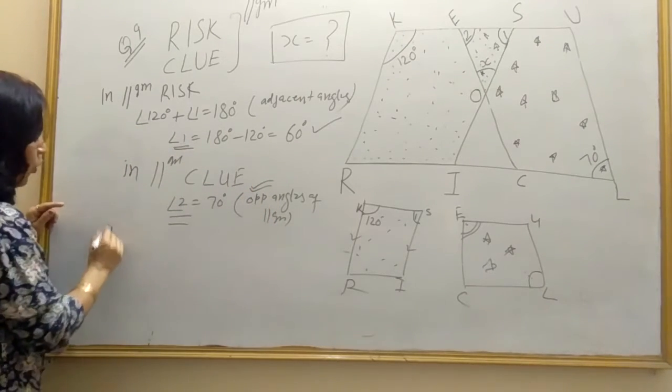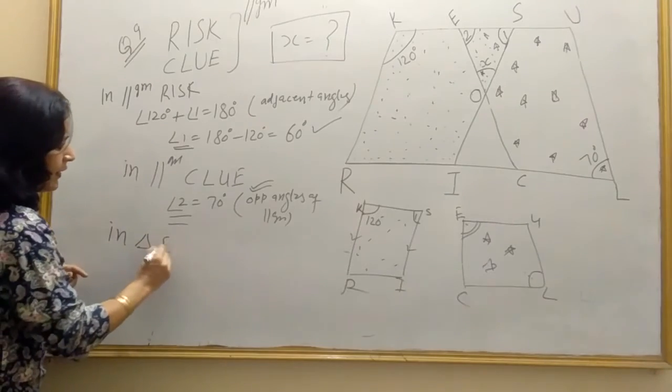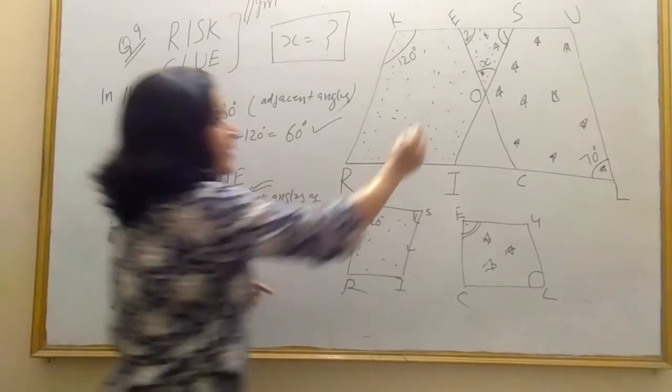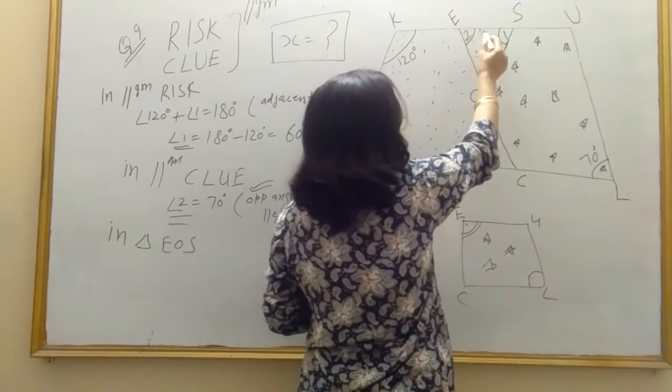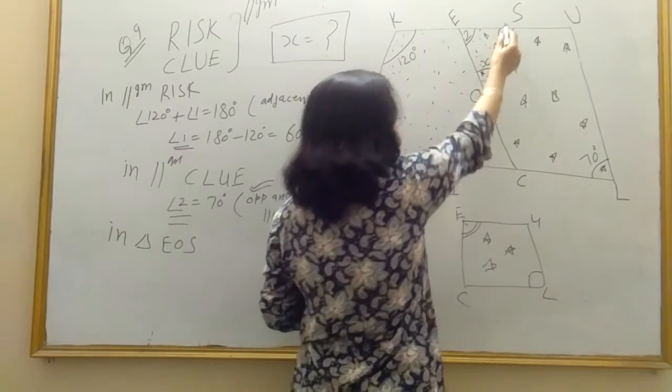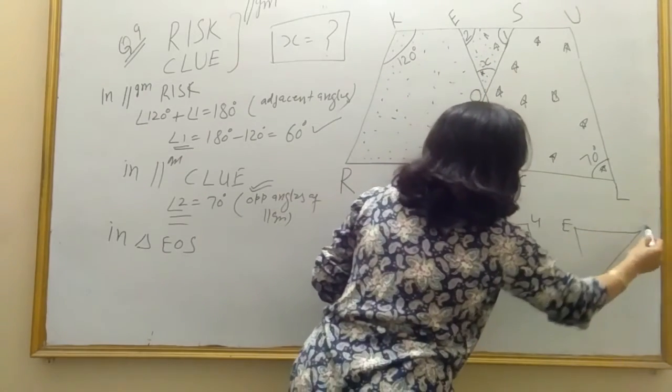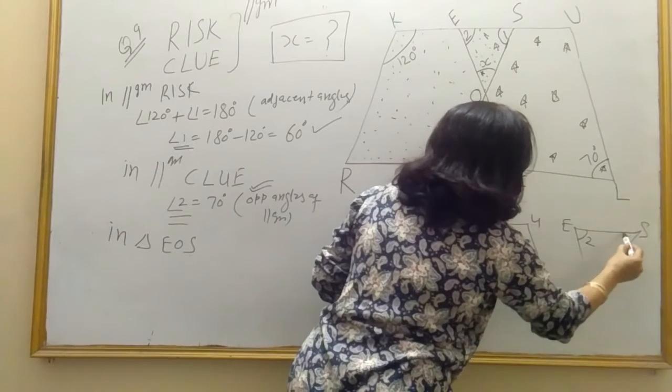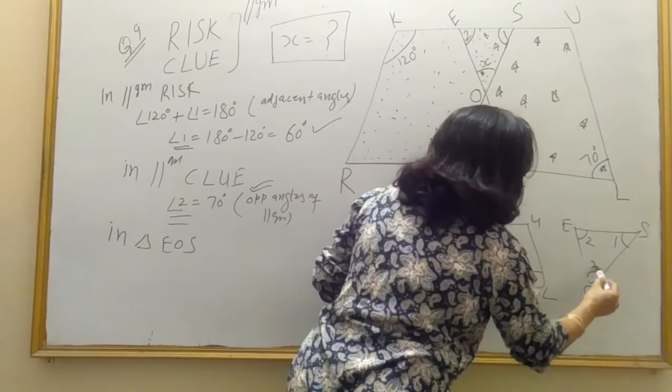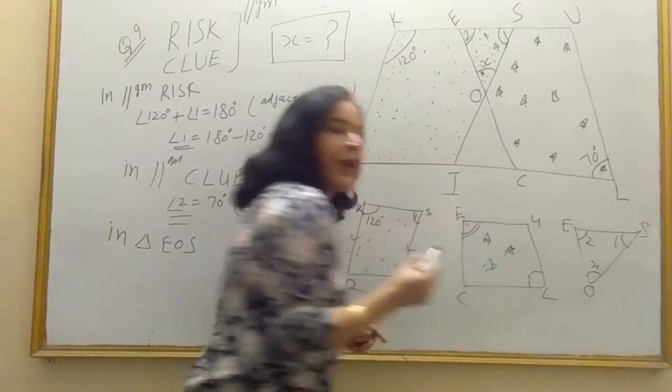So in triangle E-O-S, E-O-S, in this triangle which is common to both, star and dot here. E-O-S, like this. E-S-O, angle 2, angle 1 and S. These are the 3 angles of triangle.